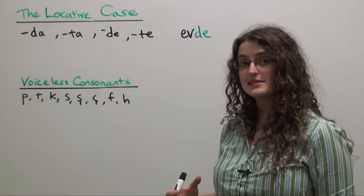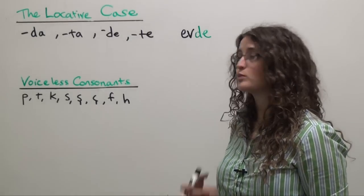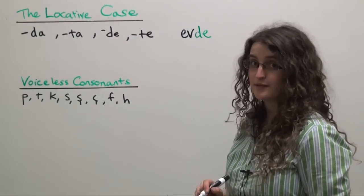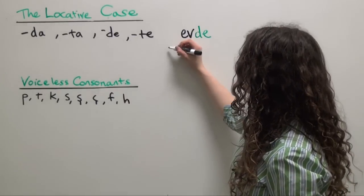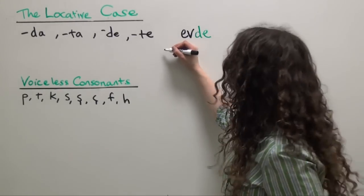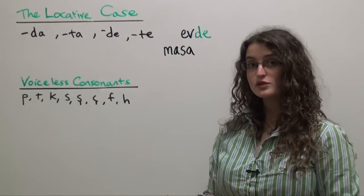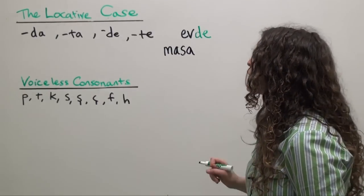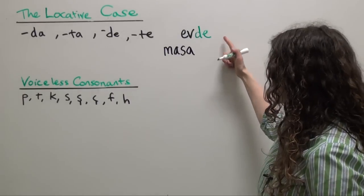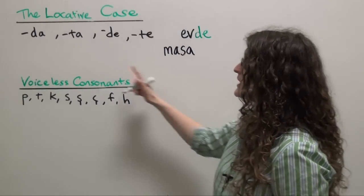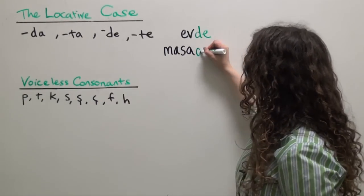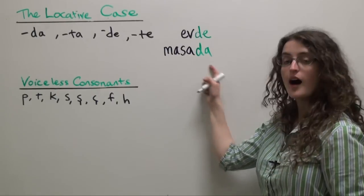What about if we want to say on the table? Still going to use the locative case ending. So the Turkish word for table is masa. Because of the rules of four-way vowel harmony, we're going to choose not de for masa, but masada. Masada, on the table.